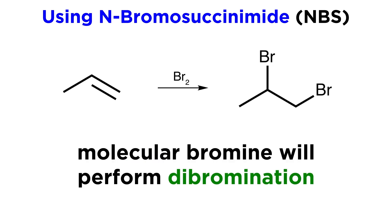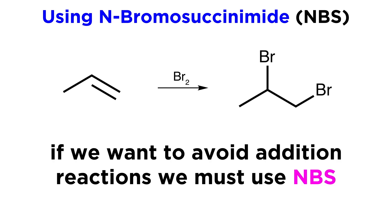The reason that we would use this reagent rather than molecular bromine is that if we are trying to brominate a molecule with one or more pi bonds, molecular bromine tends to do dibromination with pi bonds, something that is not of concern when the substrate is an alkane. So if addition reactions are to be avoided, we will want to use another reagent, and that will be NBS.